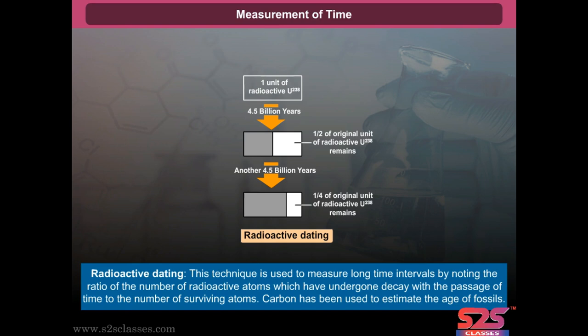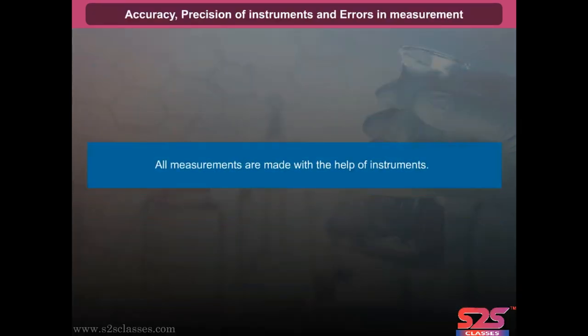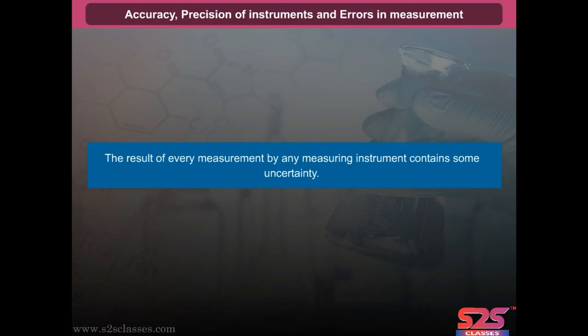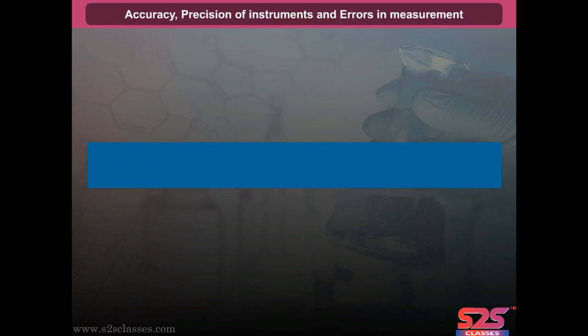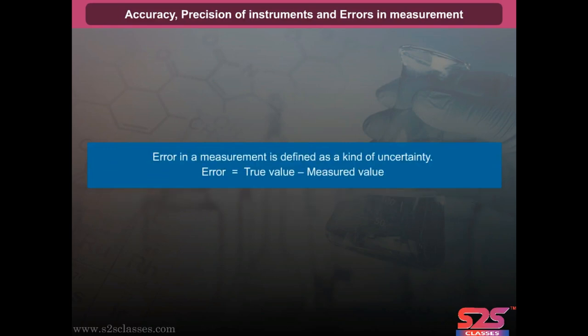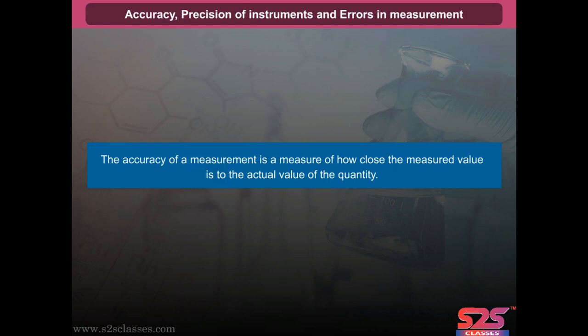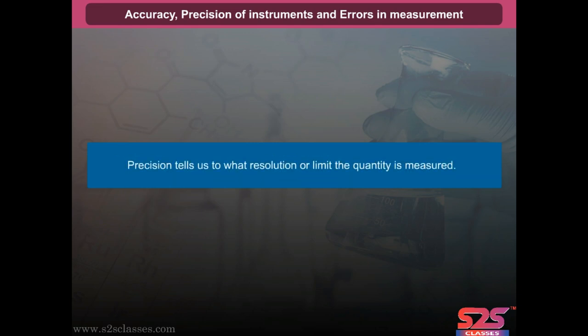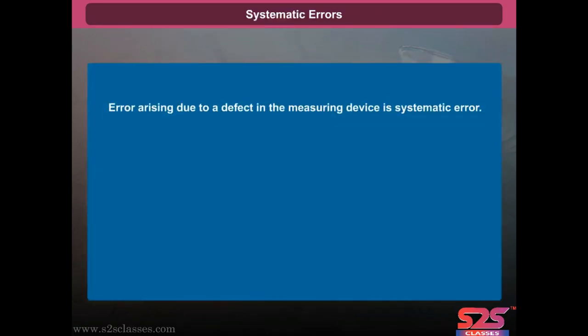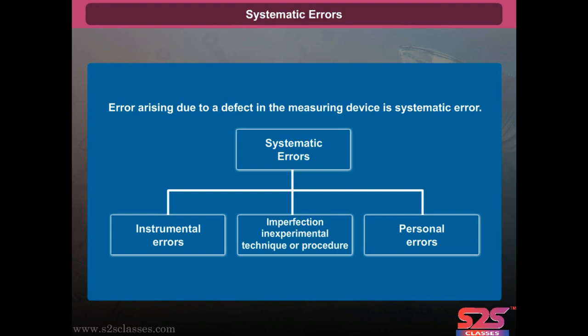All measurements are made with the help of instruments, and the result of every measurement contains some uncertainty. Error in a measurement is defined as a kind of uncertainty: error equals true value minus measured value. The accuracy of a measurement is a measure of how close the measured value is to the actual value. Precision tells us the resolution or limit to which the quantity is measured. Errors are of two types: systematic errors and random errors. Systematic errors arise due to a defect in the measuring device, and are of three types: instrumental errors, imperfection in experimental technique or procedure, and personal errors.